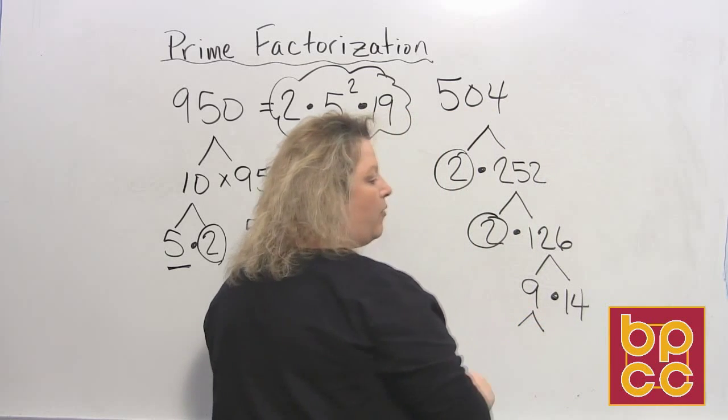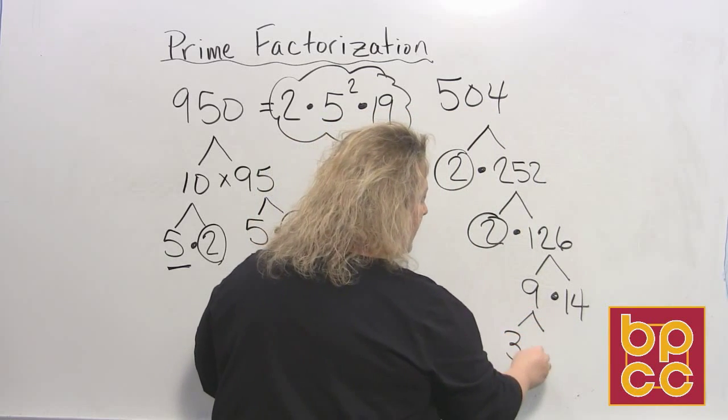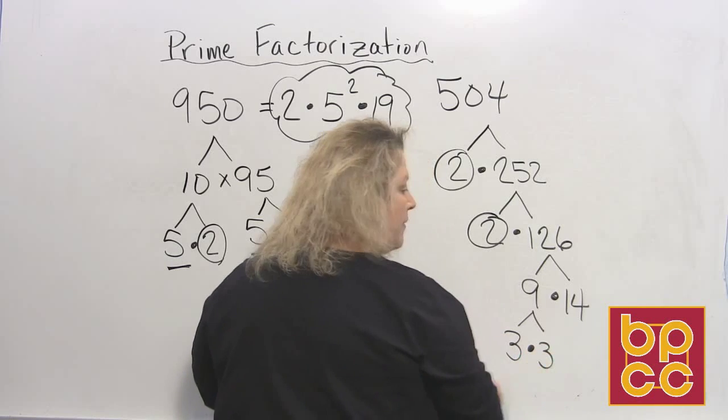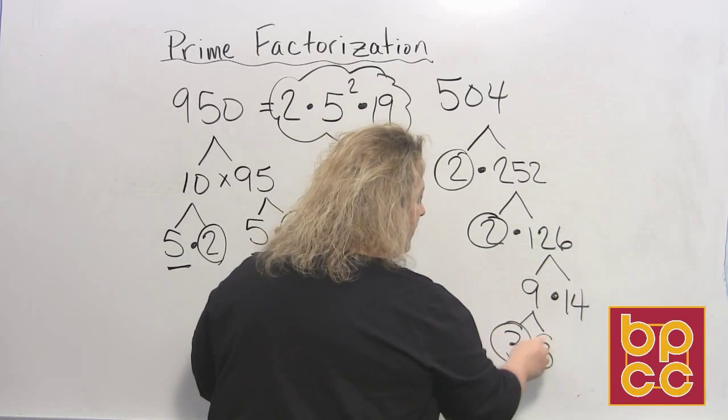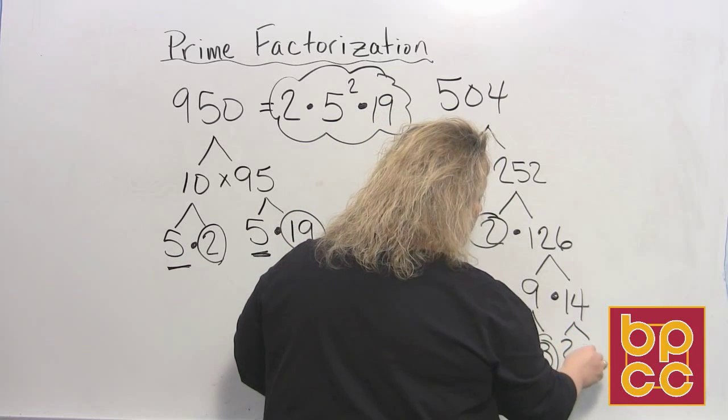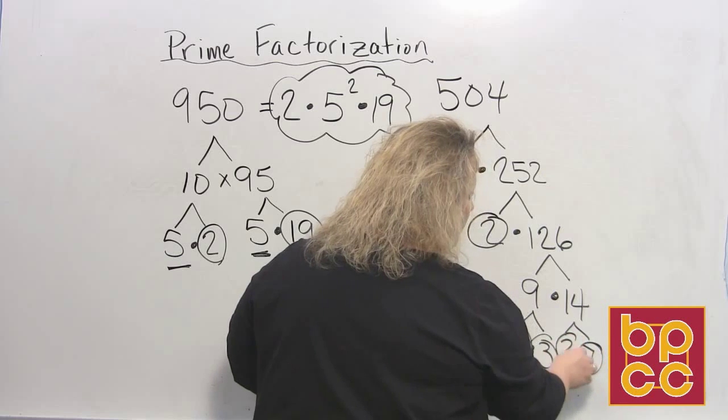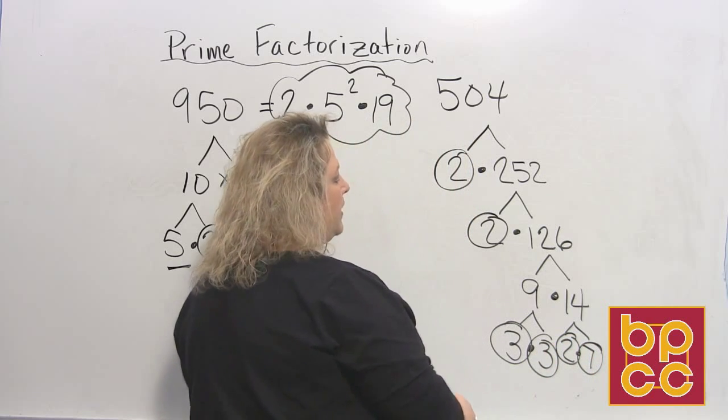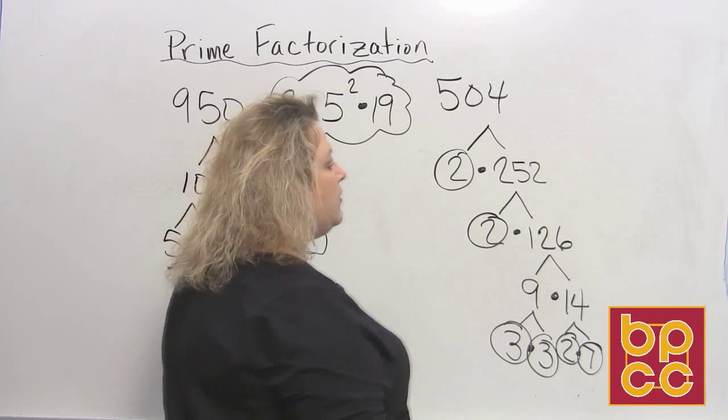Nine does break down one more time and that would be three times three. Those are prime numbers so I'm going to circle those. And then 14 breaks down and that gives me two times seven. Those are prime numbers so I circle those. Now this has a lot of prime numbers so let's write them out.